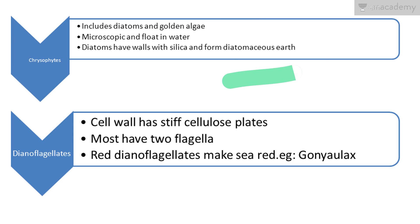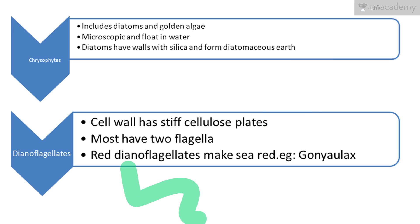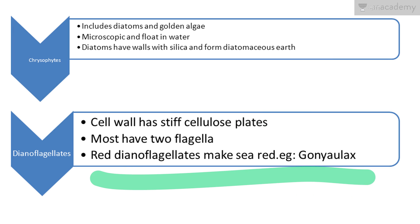Next are dinoflagellates, which have cell walls made of stiff cellulose plates and most have two flagella. Red dinoflagellates can make the sea appear red — sometimes they reproduce so frequently that they cause red tides.